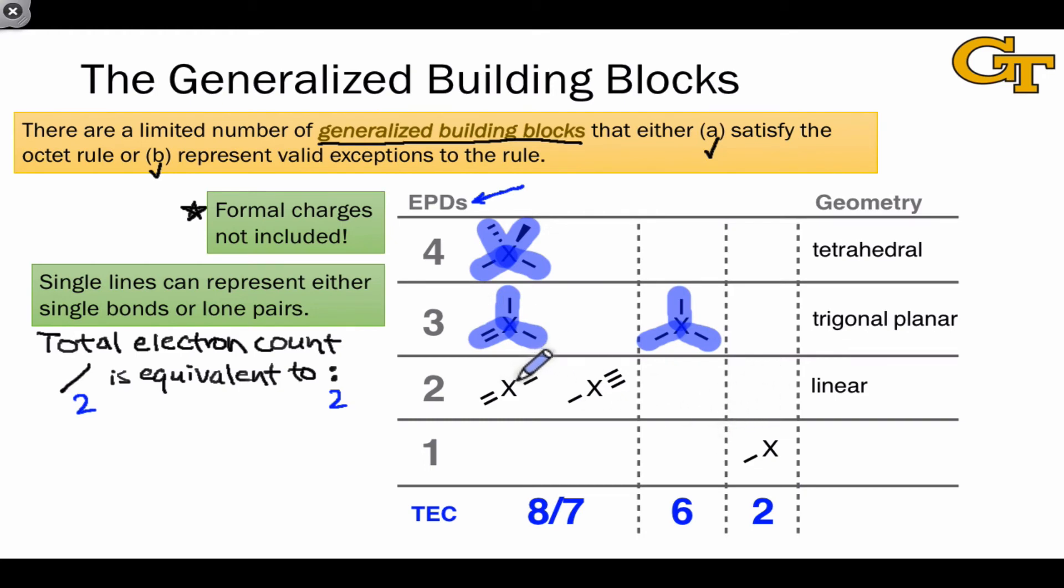To achieve two electron pair domains, we can have either two double bonds at the central atom, and these must be double bonds, or we can have a triple bond and either a single bond or a lone pair.